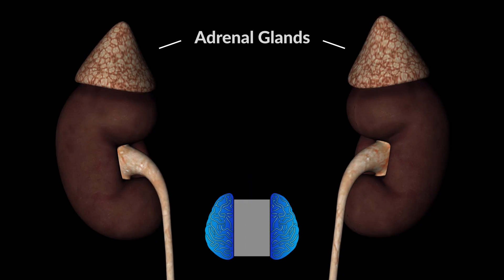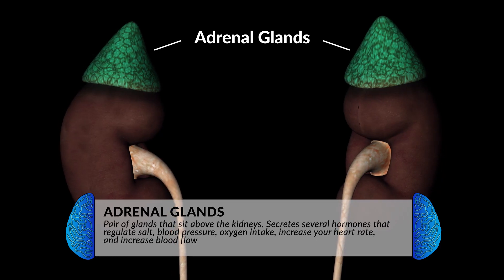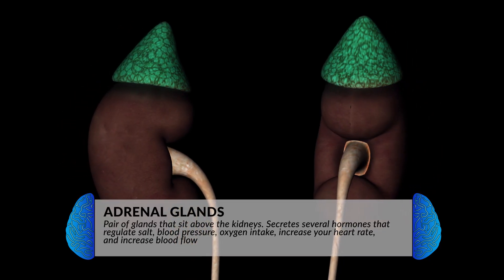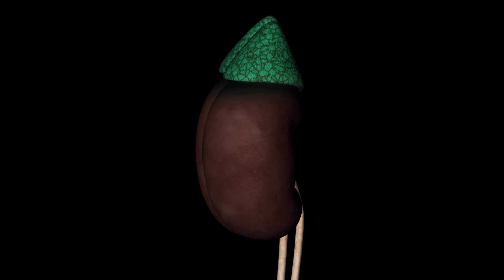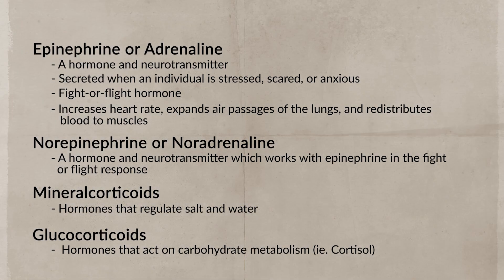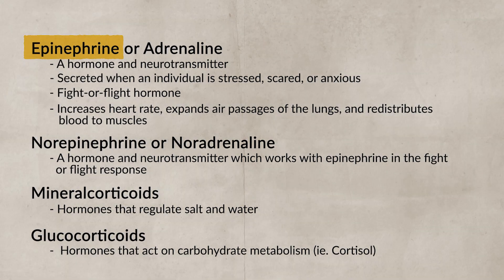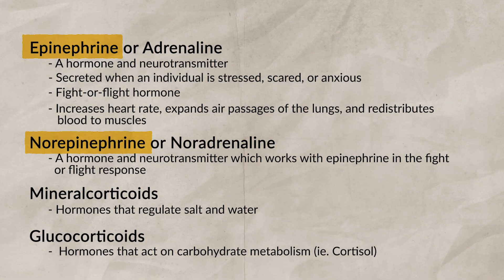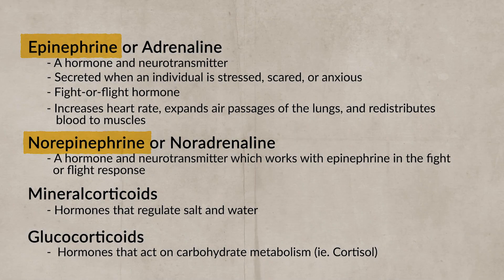Just above your kidney sits the adrenal glands. Here, hormones are produced that help regulate salt, blood pressure, oxygen intake, and increase your heart rate and blood flow. The significant hormone produced here is epinephrine, or adrenaline, and also norepinephrine — this is your fight-or-flight response. Think about a time when you were scared, anxious, or frightened. If so, you may be feeling the effects of adrenaline, which increases your heart rate, expands your air passages in the lungs, and increases blood flow to your muscles.